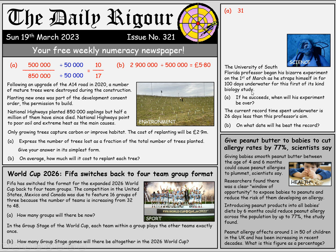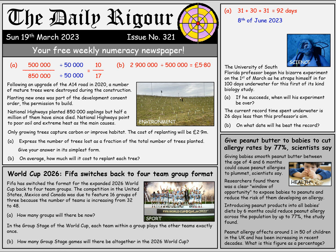There are 31 days in March, 30 days in April, and 31 days in May, which comes to 92 days. That means there are 8 days left over, going into June. So the experiment will end on the 8th of June 2023.